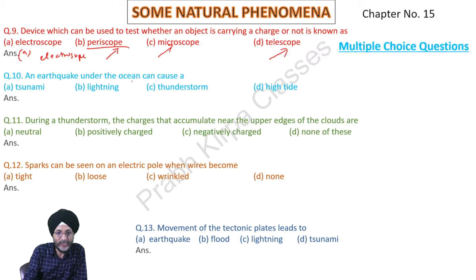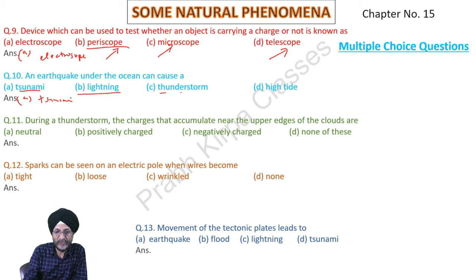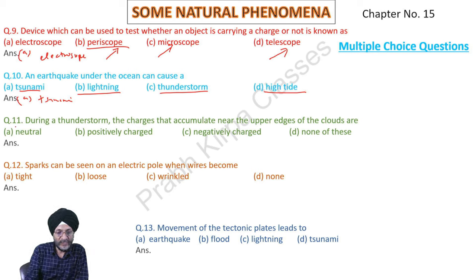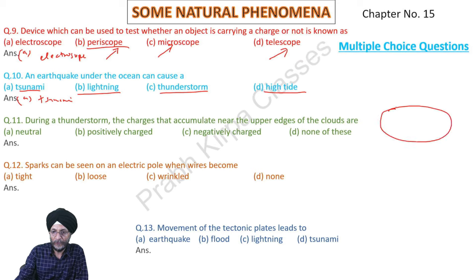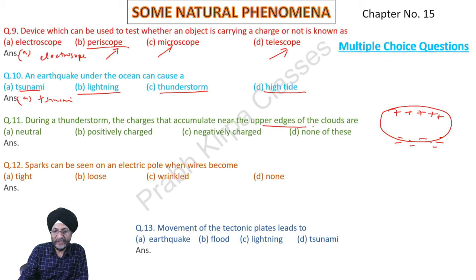An earthquake under the ocean can cause a tsunami. Lightning and thunderstorms occur in the sky, while high tides are caused by the moon. During a thunderstorm, the charges that accumulate near the upper edges of clouds are positively charged, while the lower end of the cloud carries negative charges.